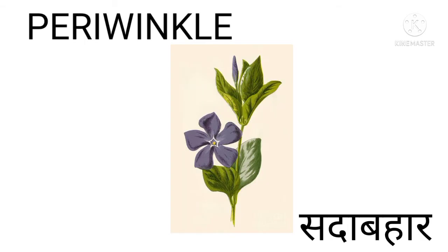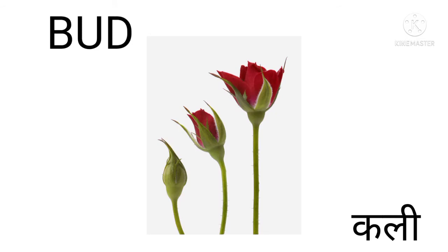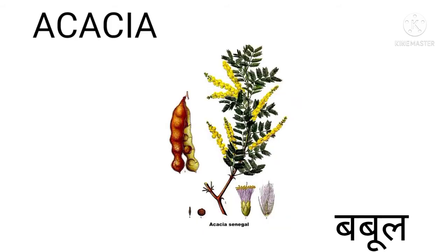Periwinkle — Periwinkle means Sadabahar. Bird of Paradise — Bird of Paradise means Sekali. Acacia — Acacia means Babul.